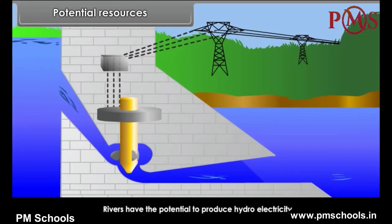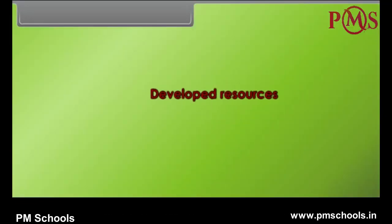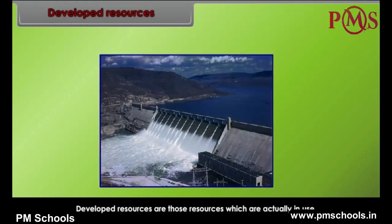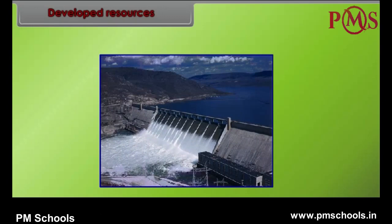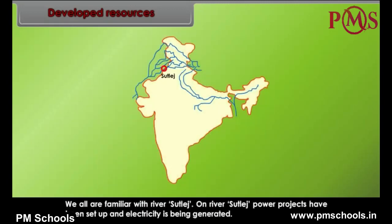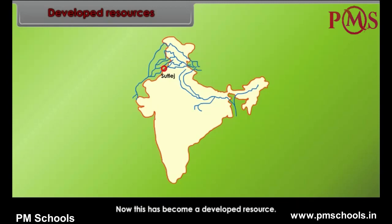Developed resources are those resources which are actually in use. For example, on river Sutlej, power projects have been set up and electricity is being generated — this has become a developed resource.